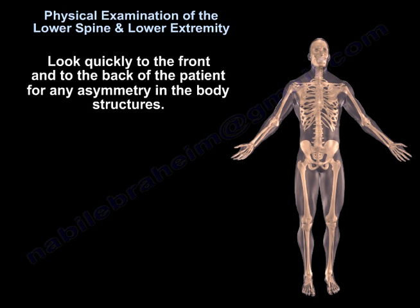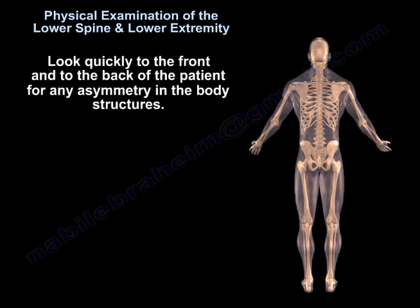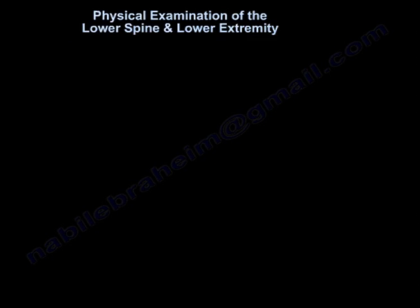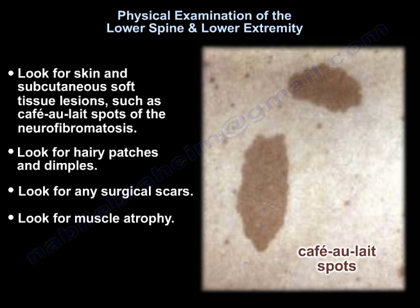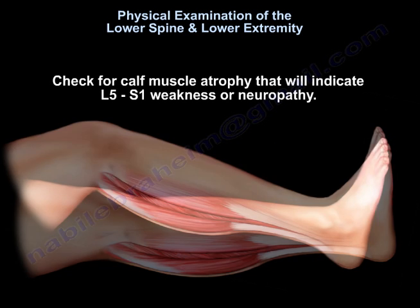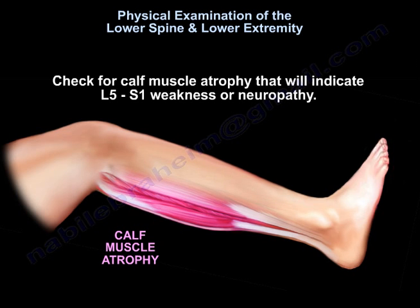Look quickly to the front and the back of the patient for any asymmetry in the body structures. Also, look for skin and subcutaneous soft tissue lesions, such as café au lait spots of neurofibromatosis. Look for hairy patches and dimples. Look for any surgical scars. Check for calf muscle atrophy, which will indicate L5-S1 weakness or neuropathy.